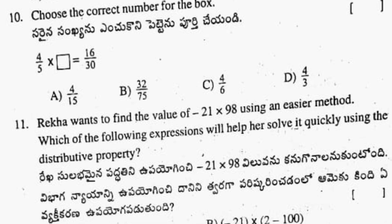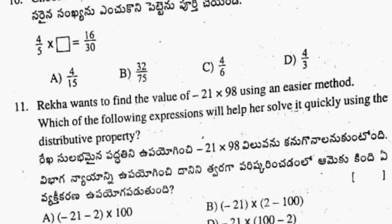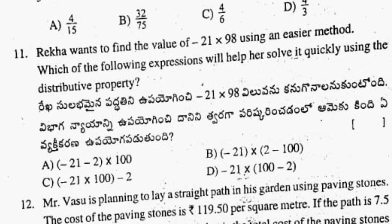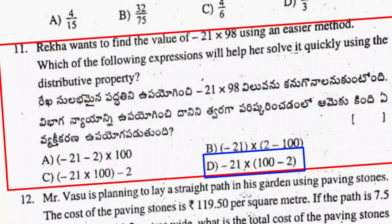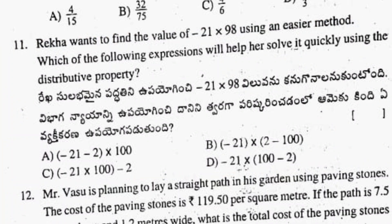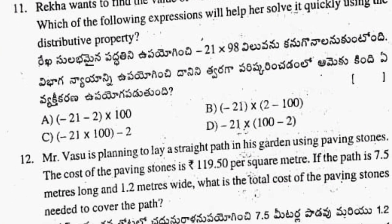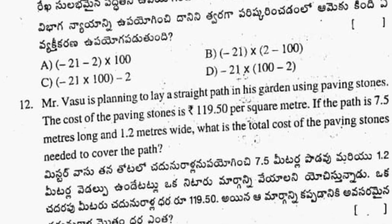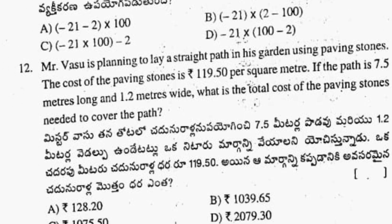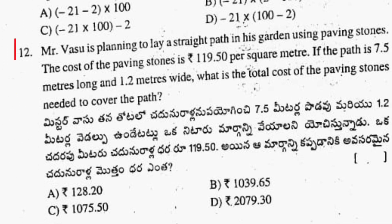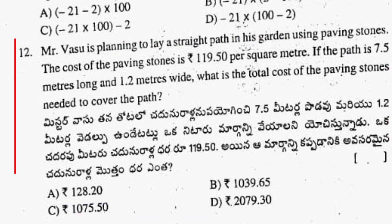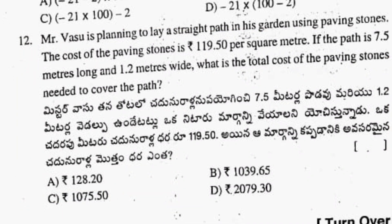Eleventh question: minus 21 into 98 — I will solve this method. Option D is the correct answer. Option C is the correct answer, Rs. 1,075.50.